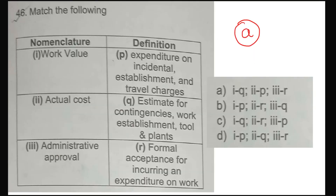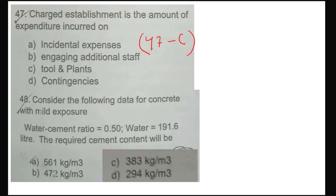Now question 45 and 46 — match the following. Question 45 is a difficult question related to project management definitions: work value, actual cost, administrative approval, and answer issue. For question 46, option number A will be correct.